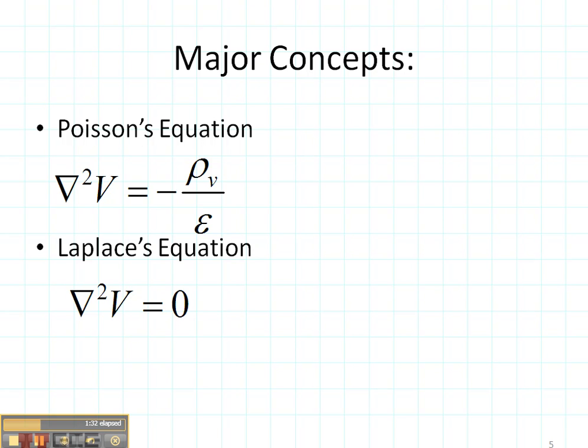Now here's how the Laplacian is most often used. We have two famous equations. One is called Poisson's equation. The other is called Laplace's equation. They are typically used for calculating the potential and once you know the potential you can calculate the electric field.